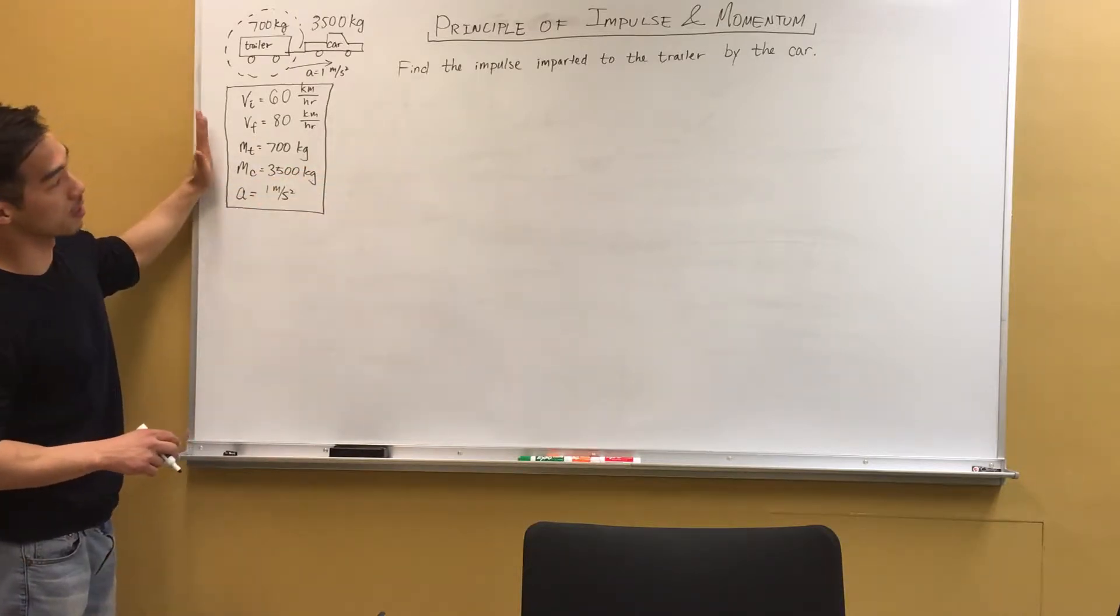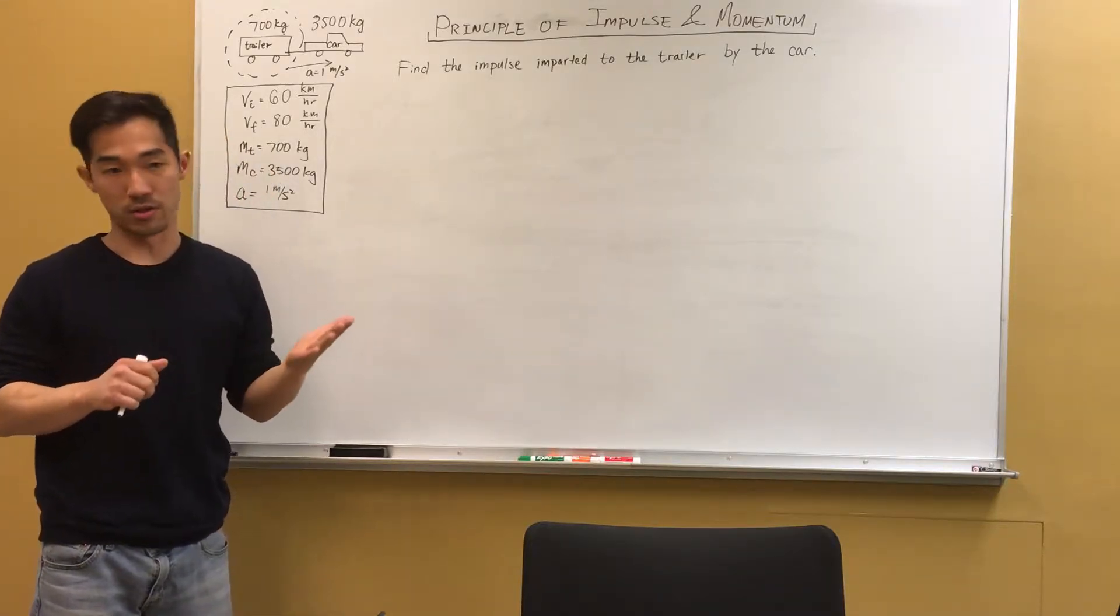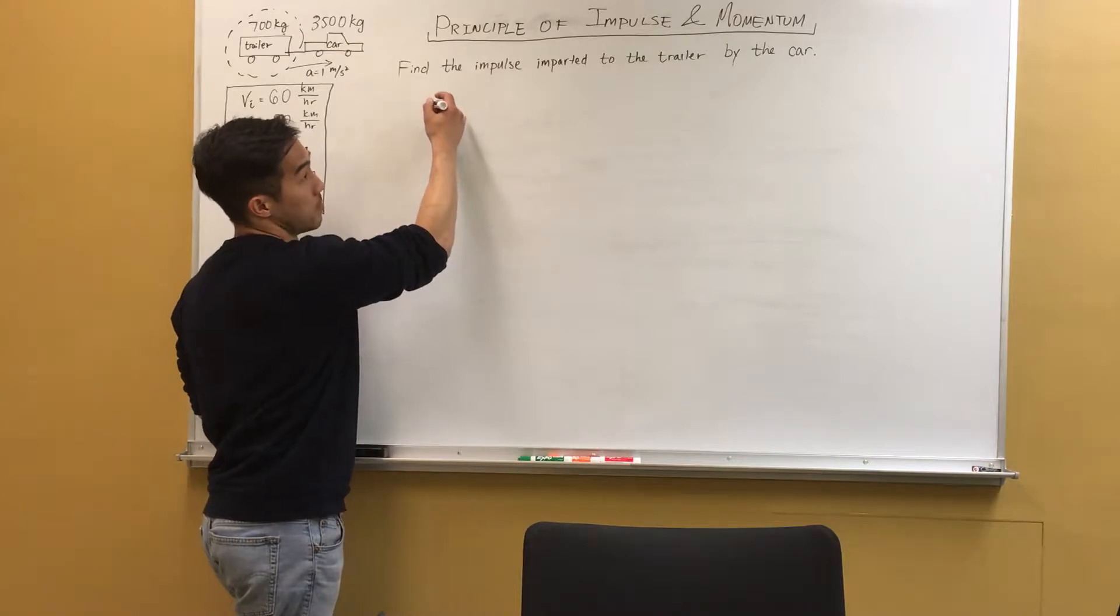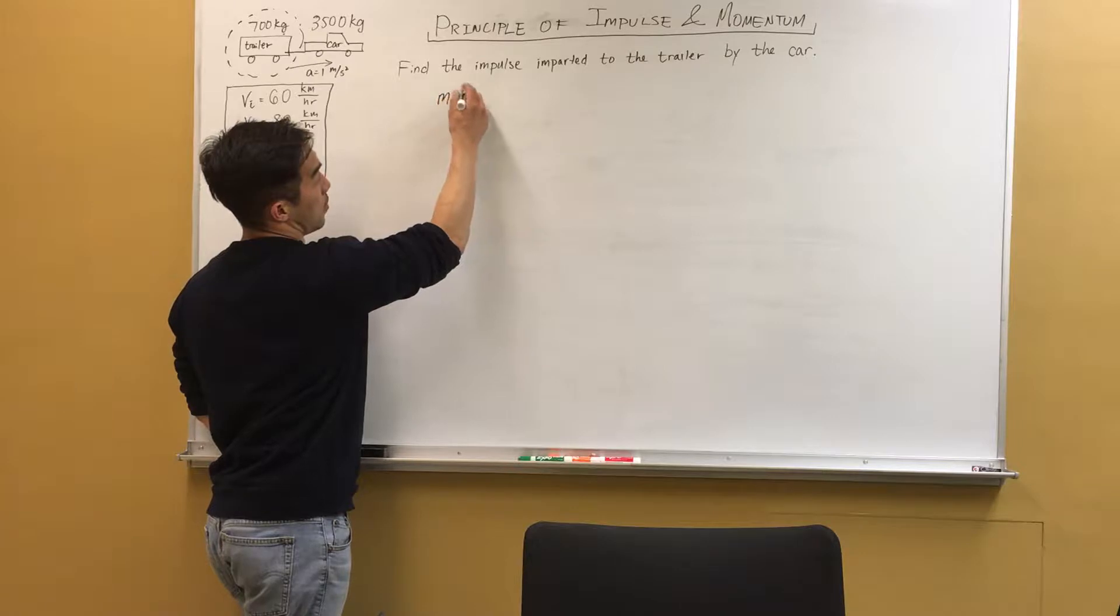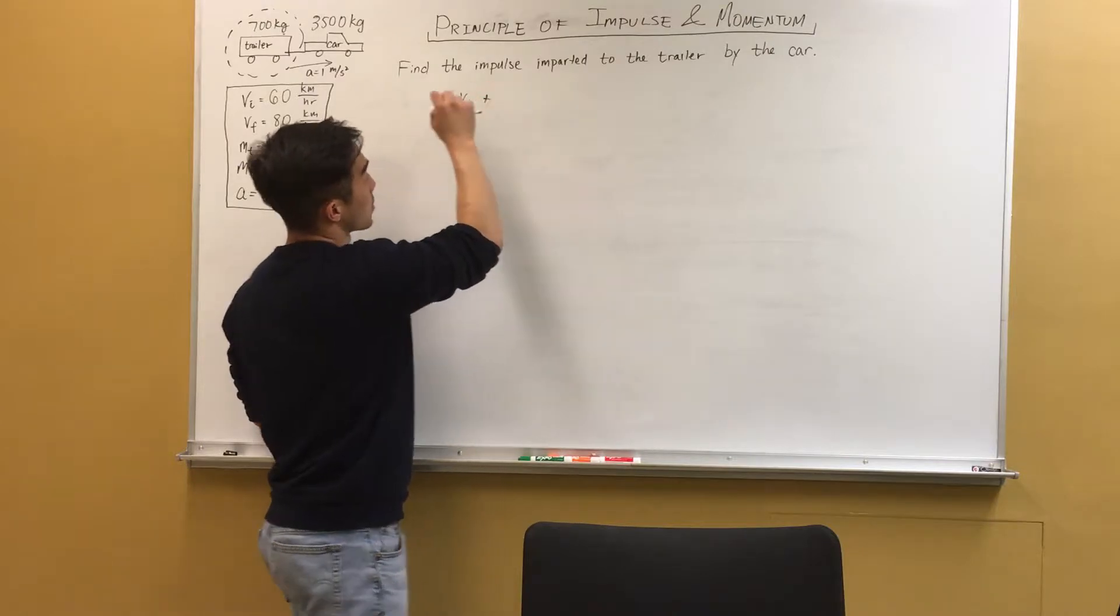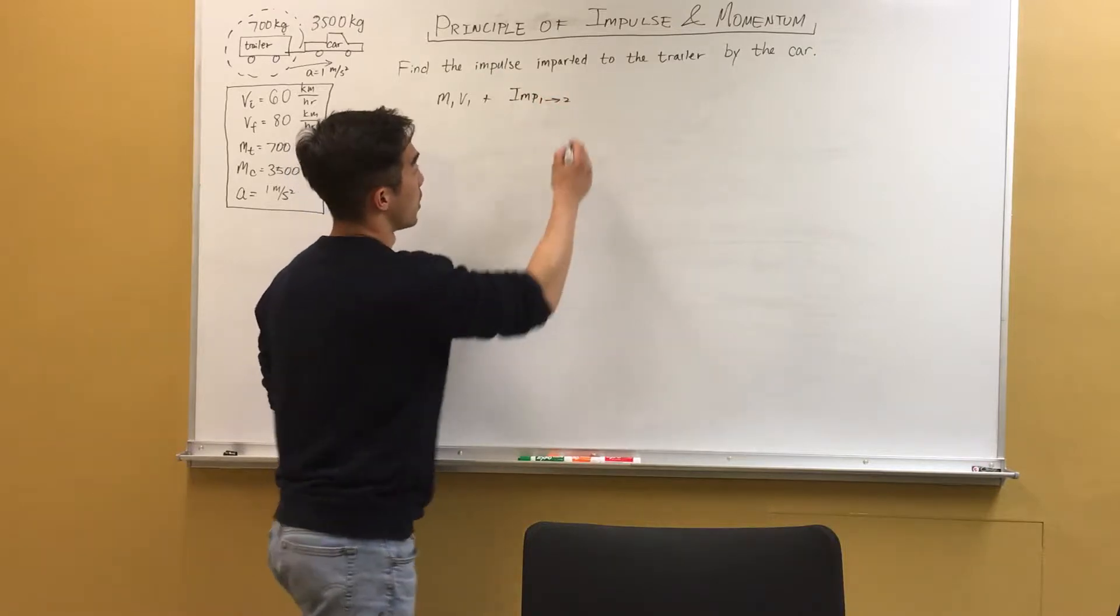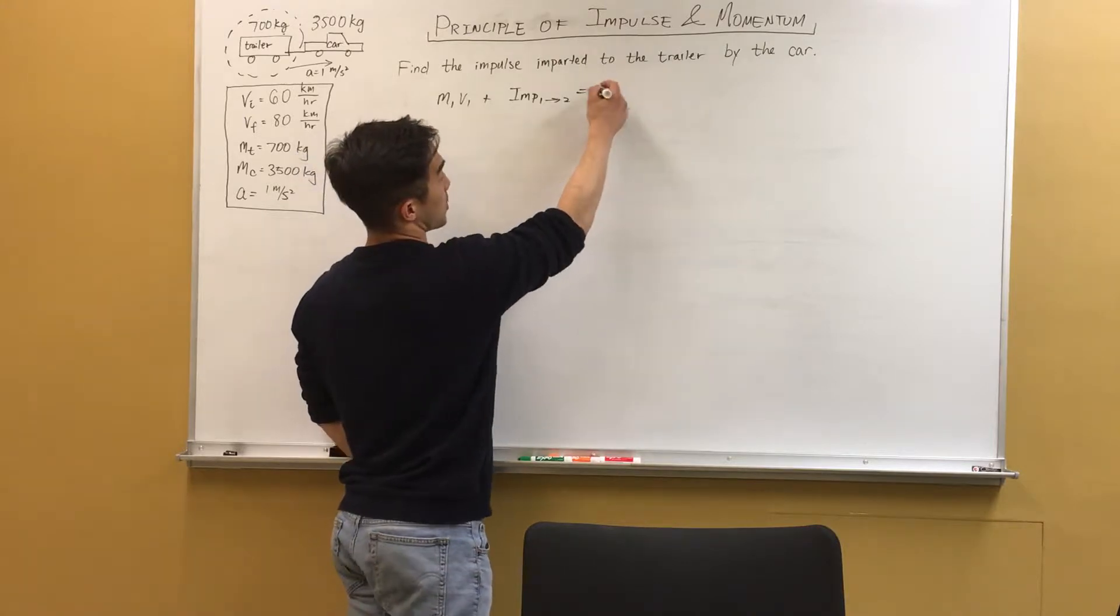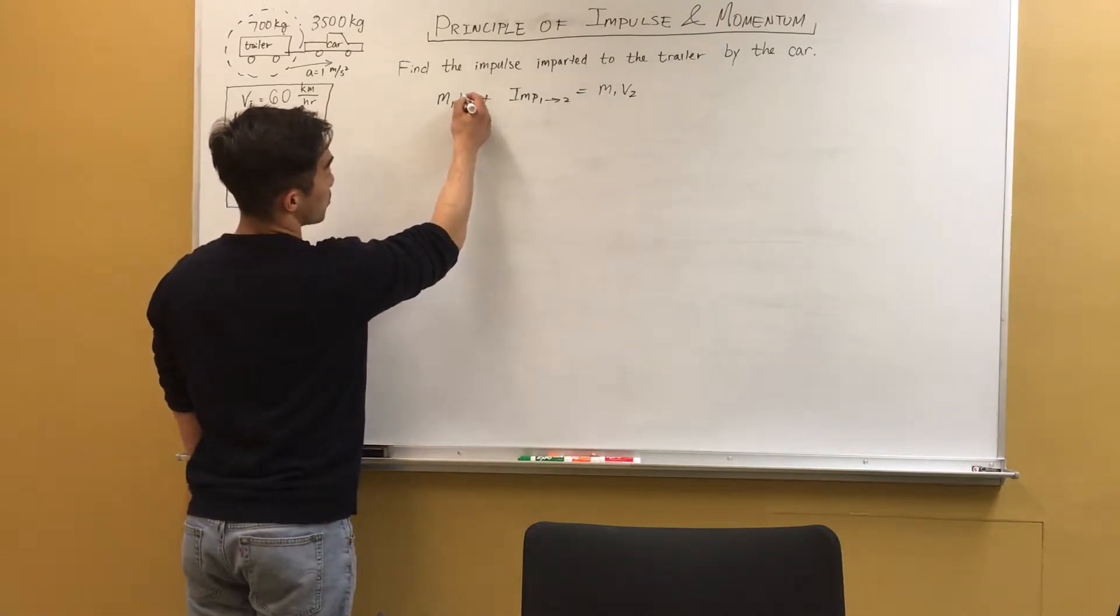The givens are here, given in this box. So the first thing we need to do is actually write out the equation of the impulse and momentum principle, which is going to be the momentum caused by the initial velocity, M1V1, plus the impulse from condition 1 to condition 2, imp 1 to 2. And that's going to equal the momentum in the final state, M1V2, or we could call it initial and final.